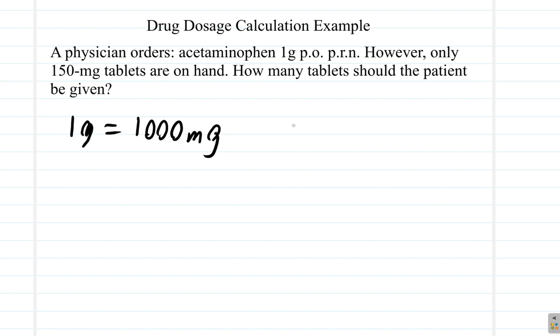What we have here is that the patient should be given 1000 mg, but each tablet contains only 150 mg. If you give the patient one tablet, the patient gets 150 mg. Not enough.